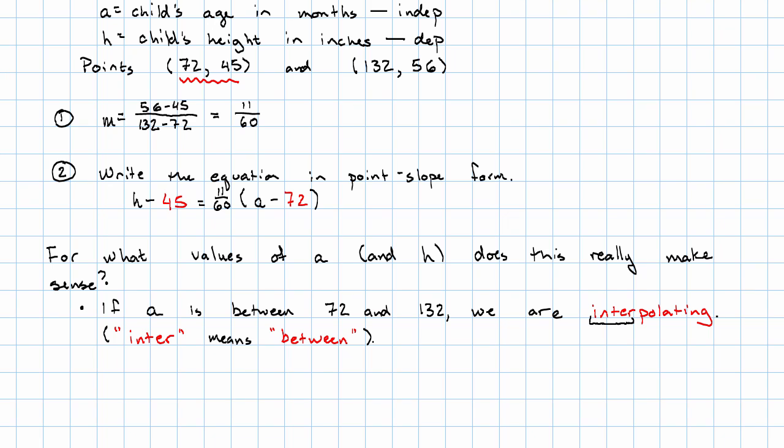We're interpolating if we're between the given values. And that's probably going to make sense. We might be a little bit off, but there's only so bad it can get if we're interpolating.